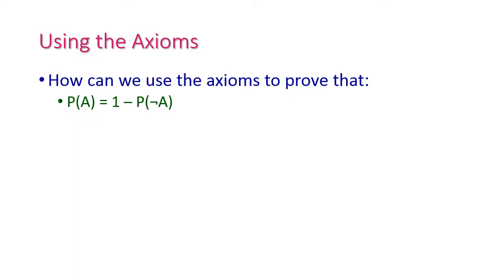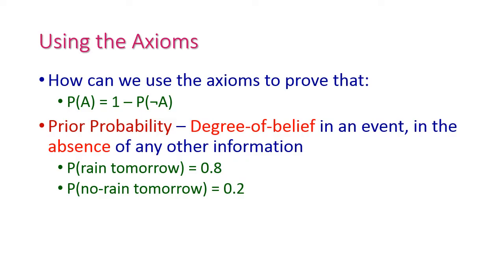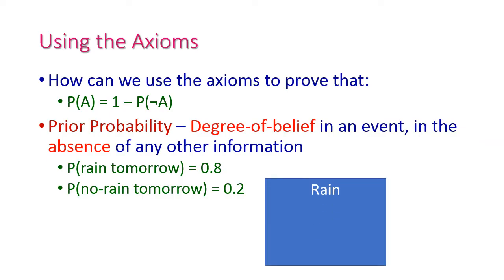Using the axioms we can prove P(A) = 1 − P(¬A). We can also describe prior probability, which is the degree of belief in an event in the absence of any other information — that is, without enough information we need to conclude the given statement. For example, P(rain tomorrow) = 0.8 (80% chance of rain tomorrow) and P(no rain tomorrow) = 0.2 (20% chance).